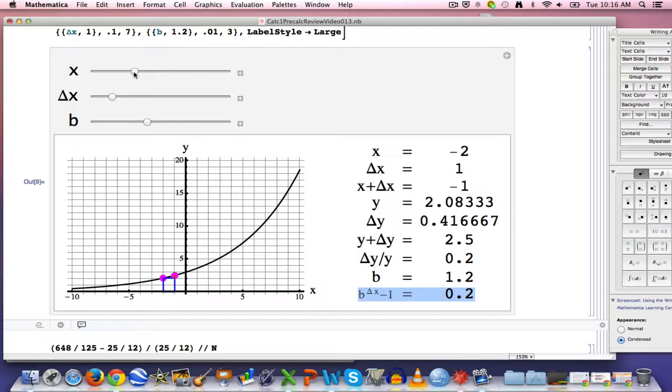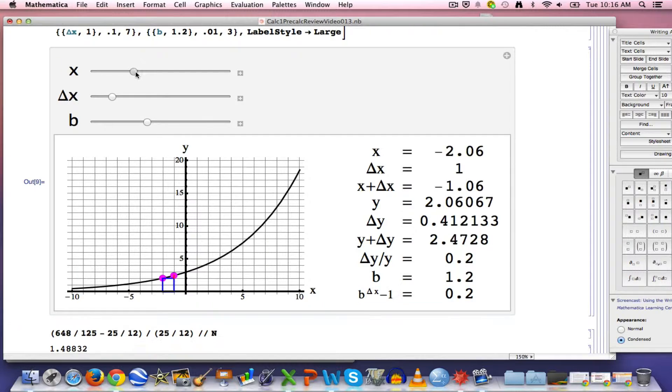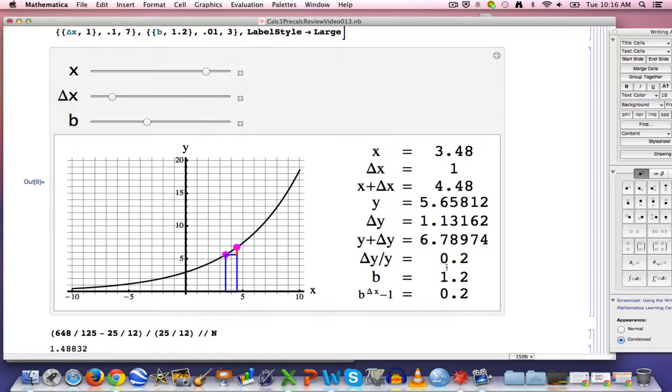And it doesn't matter what A is. It doesn't matter what the starting value of X is. I can change that. Notice, these still stay the same at .2. It's still a 20% growth over one unit of X. If X is time, that would be one year, for example, if X is in years.